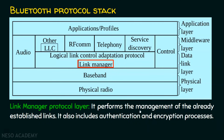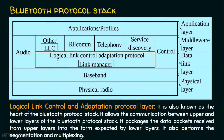Then comes the logical link control adaptation layer, or the adaptation protocol (L2CAP). It is also known as the heart of the Bluetooth protocol stack, because it acts as the interface between the upper layers and the lower layers. It allows communication between the upper and lower layers of the Bluetooth protocol stack, and it packages the data packets received from the upper layers in the form expected by the lower layers.